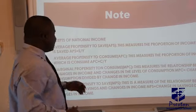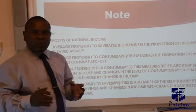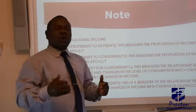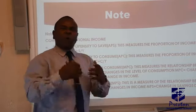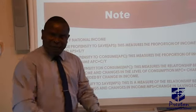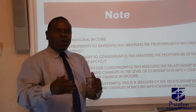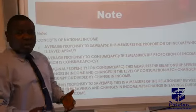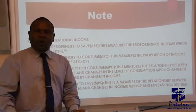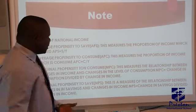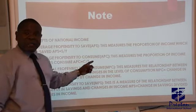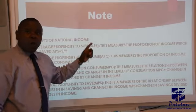What is APS? APS, which is also called average propensity to save, is talking about the proportion of your income that you intend saving. For instance, if you are collecting 50,000 naira, how much do you intend saving out of 50,000 naira? It has a formula: APS is equal to S over Y.